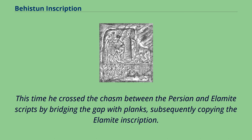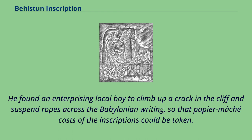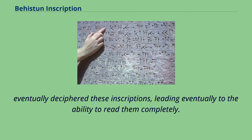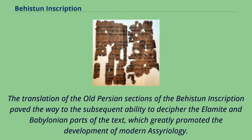This time he crossed the chasm between the Persian and Elamite scripts by bridging the gap with planks, subsequently copying the Elamite inscription. He found an enterprising local boy to climb up a crack in the cliff and suspend ropes across the Babylonian writing, so that papier-mâché casts of the inscriptions could be taken. Rawlinson, along with several other scholars — most notably Edward Hincks, Julius Oppert, William Henry Fox Talbot, and Edwin Norris — either working separately or in collaboration, eventually deciphered these inscriptions, leading to the ability to read them completely. The translation of the Old Persian sections paved the way to deciphering the Elamite and Babylonian parts, which greatly promoted the development of modern Assyriology.